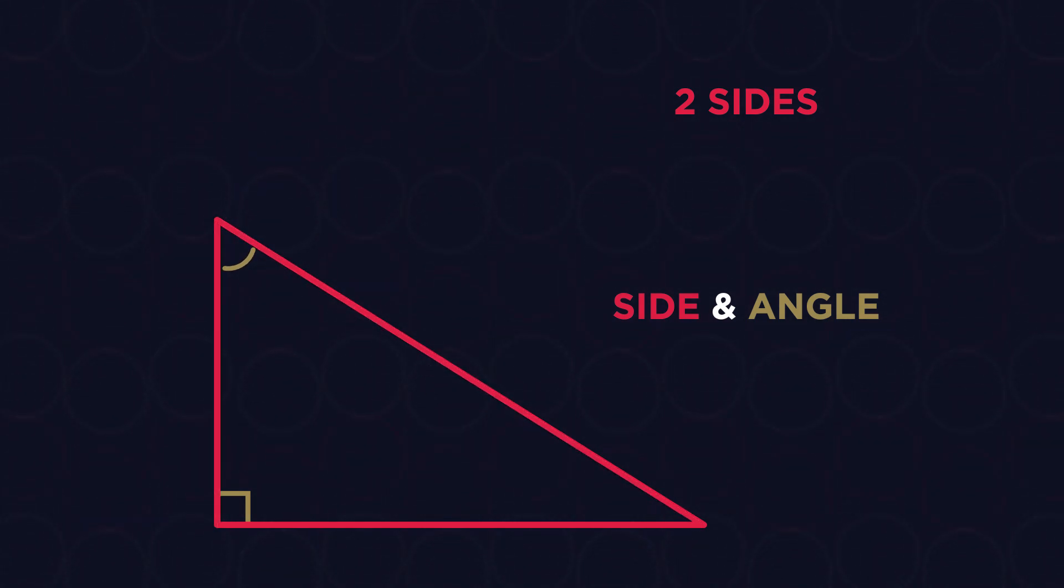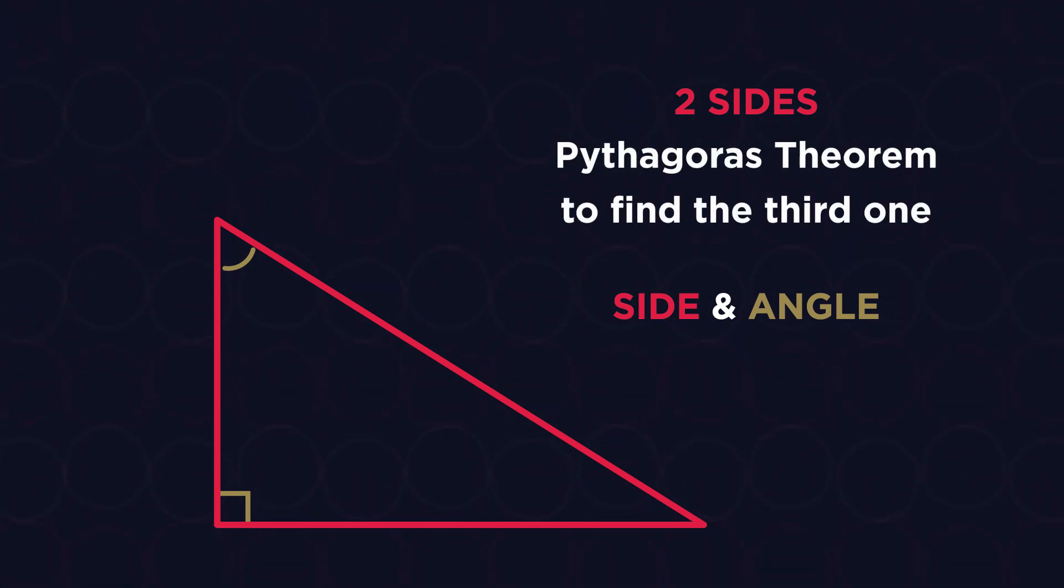If we know two sides and are looking for the third one, we can use Pythagoras Theorem. If we know a side and an angle and are looking for other sides, or if we know the sides and are looking for an angle, we can use SOHCAHTOA ratios.